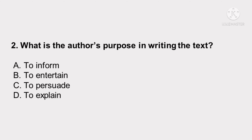Blue skies and beautiful sunsets are effects of the atmosphere. White light contains all the colors of the rainbow. As the white rays of the sun pass through the gases and dust in the atmosphere, they are broken up into different colors. Number 2: What is the author's purpose in writing the text? A. To inform. B. To entertain. C. To persuade. Or D. To explain.